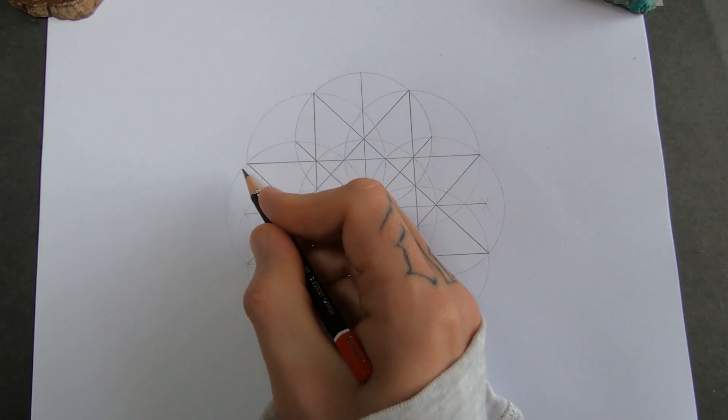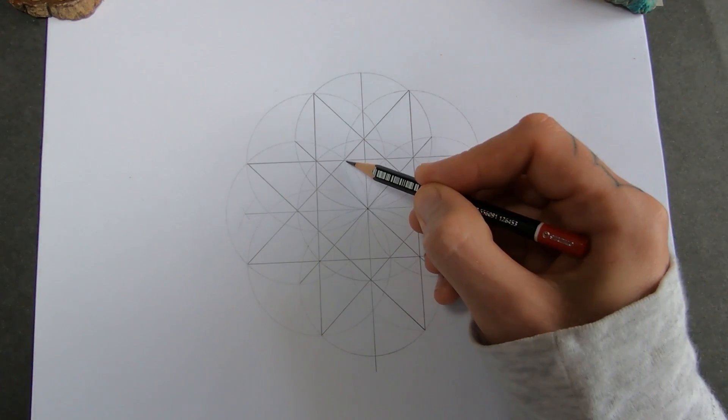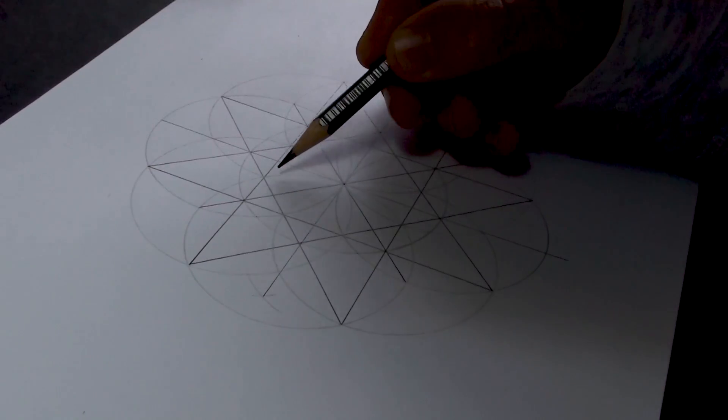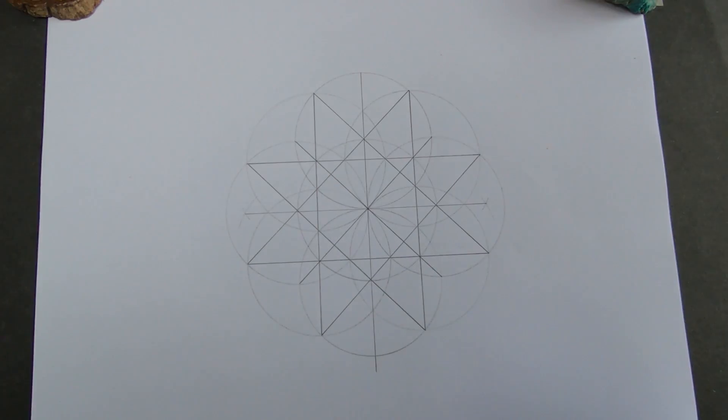Alright, there it is. So you see how this cuts through this point. And then it also cuts through this intersection where this petal reaches out to. Everything is connected. Pretty cool.